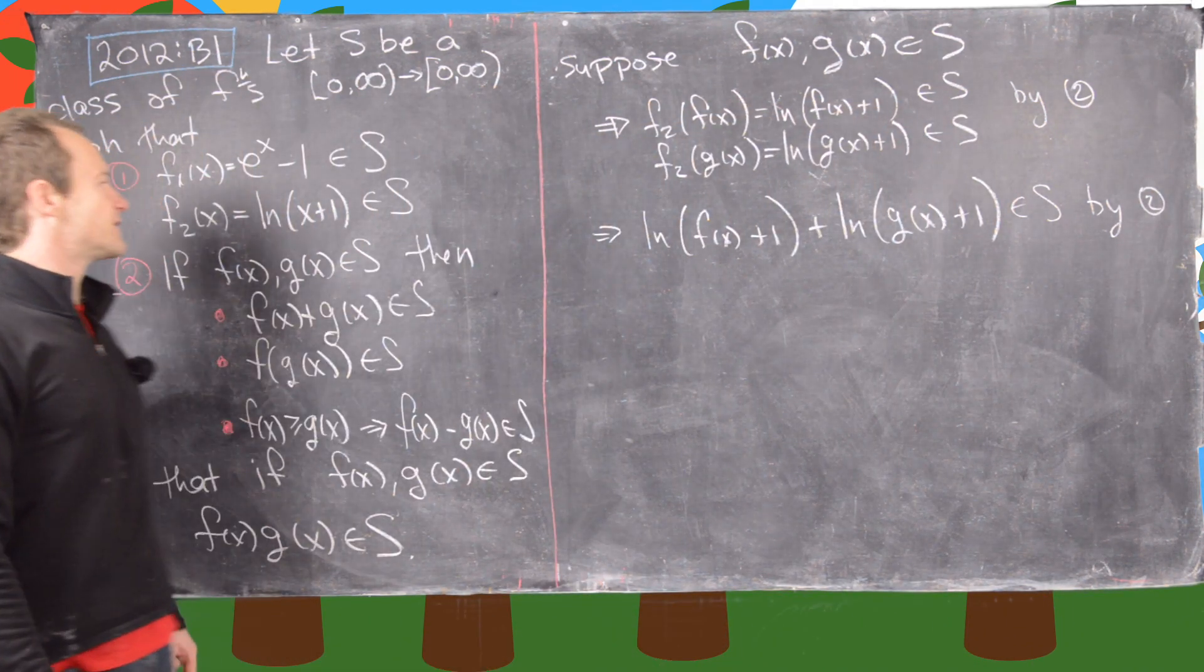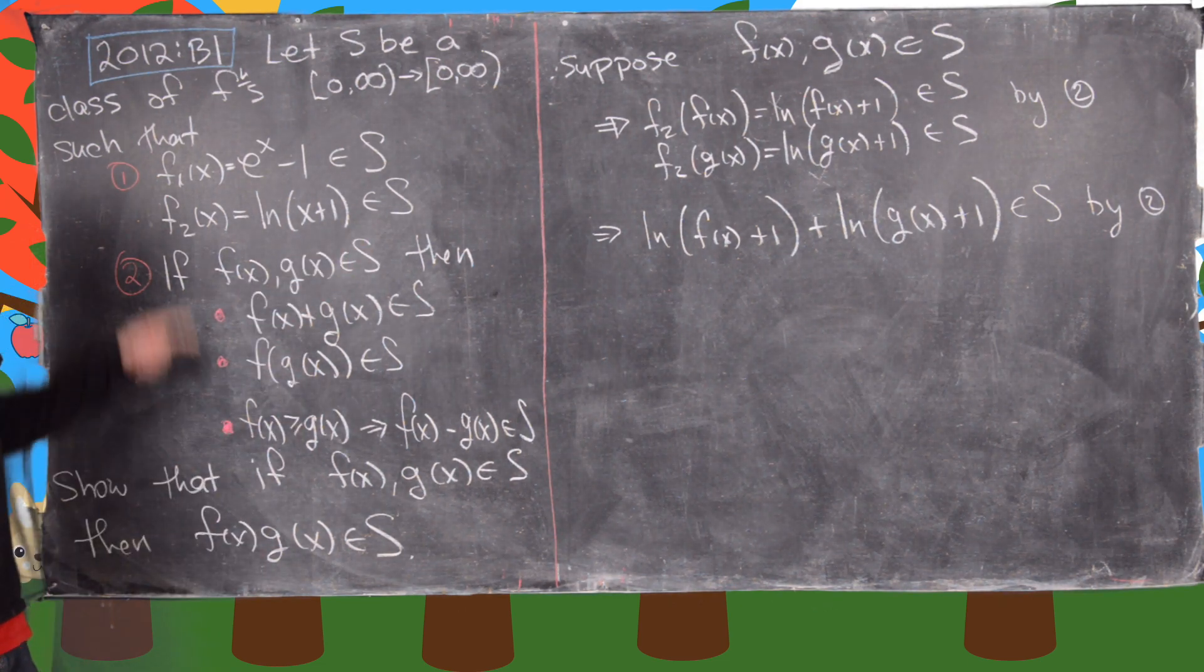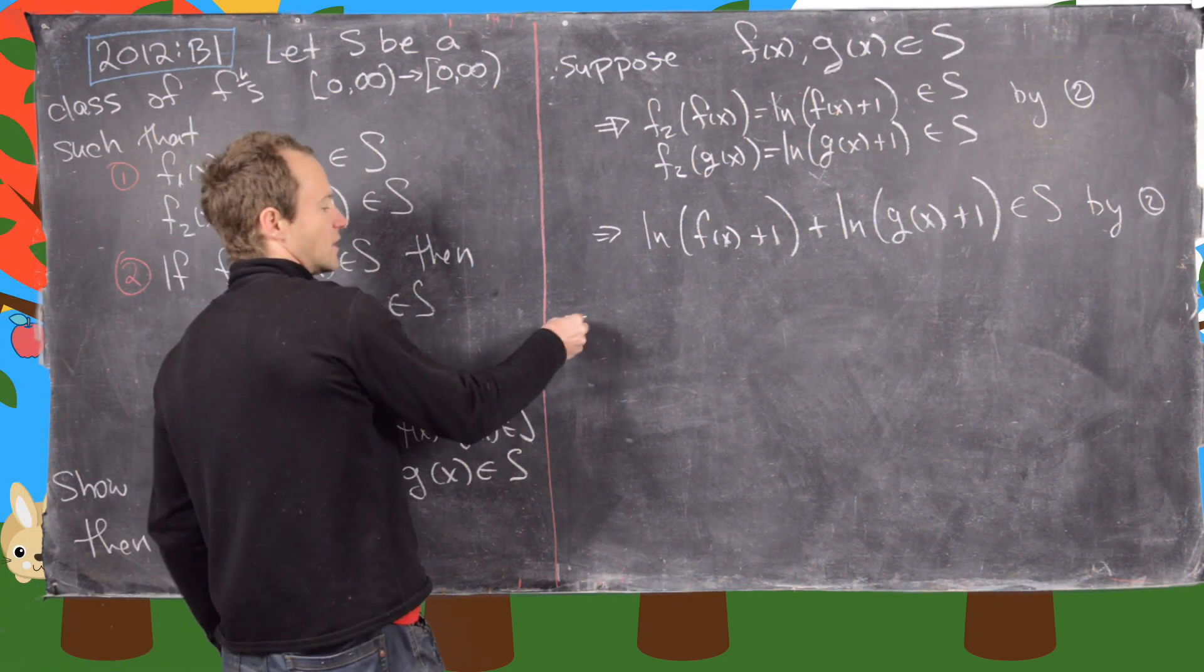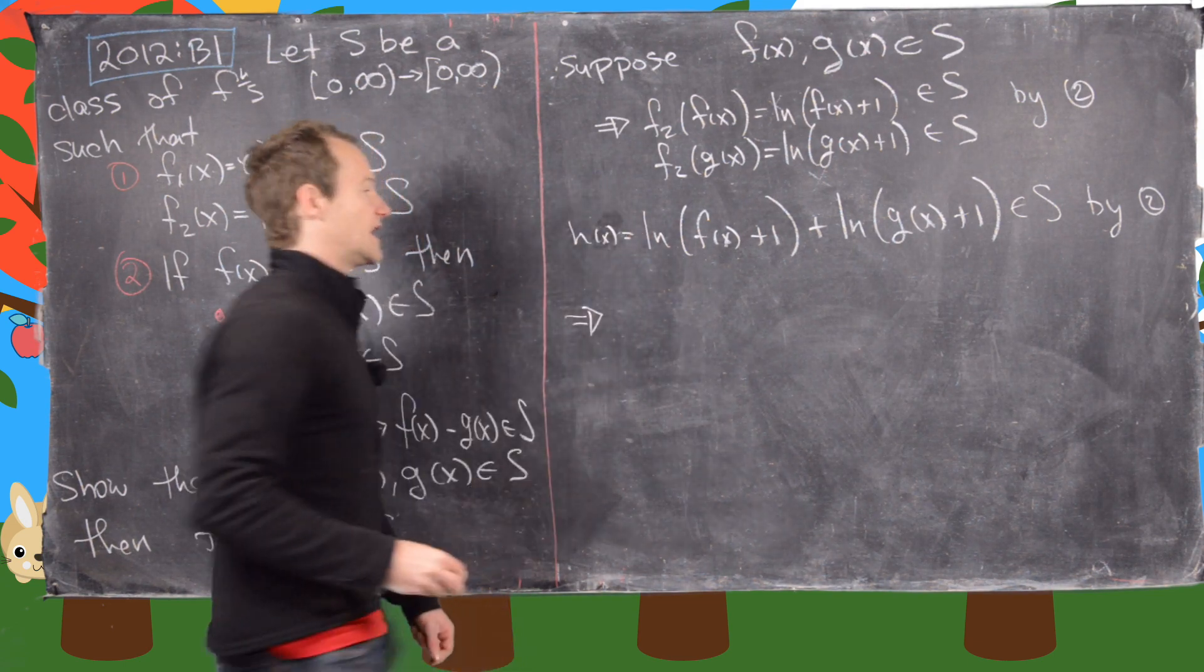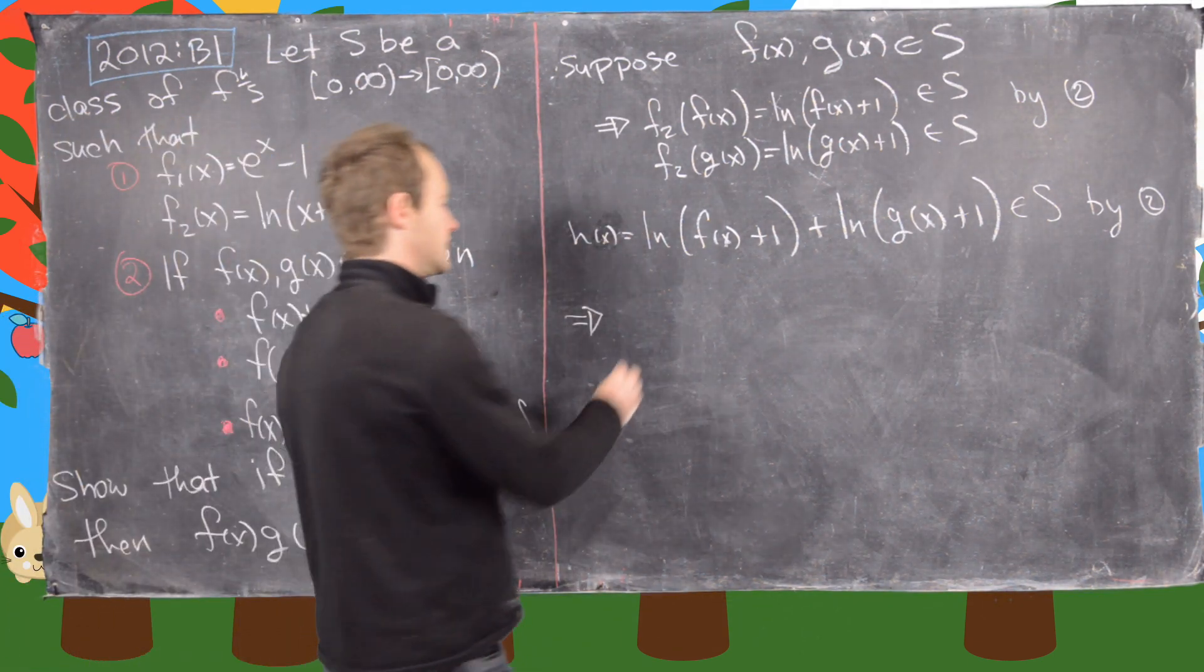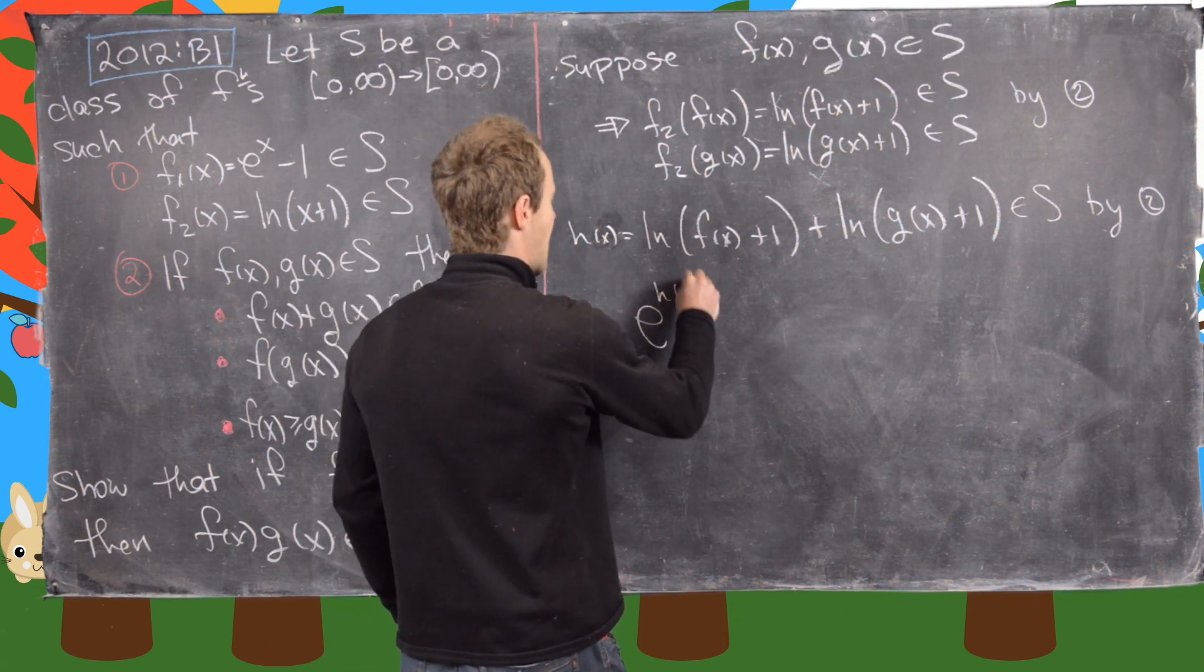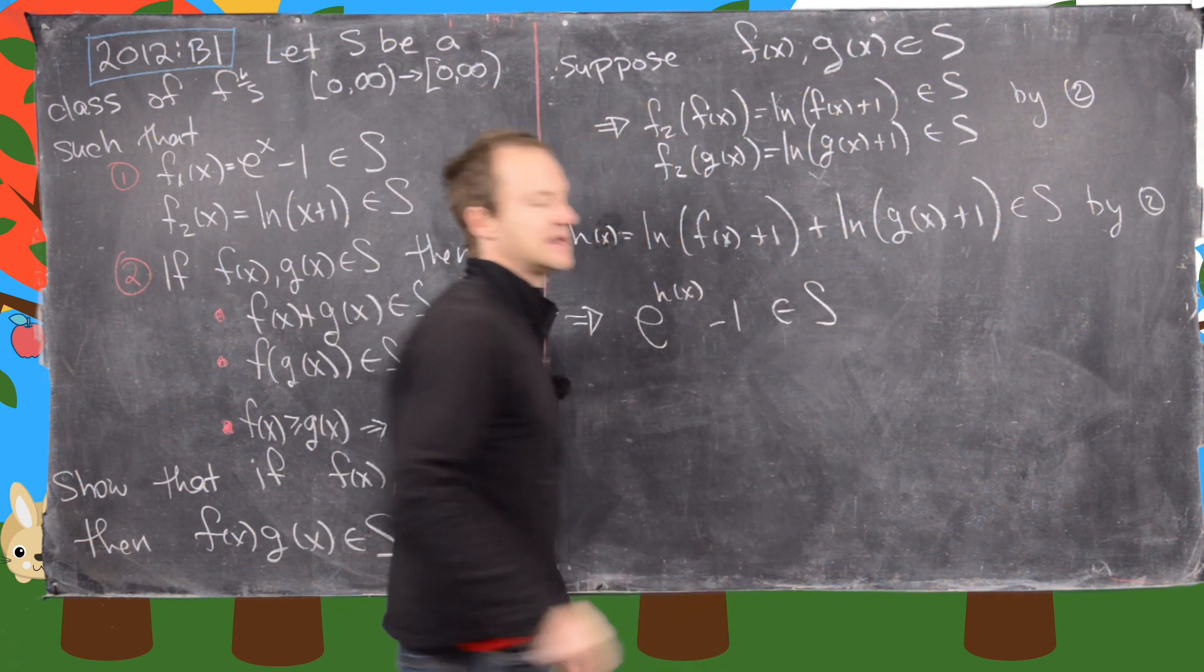Now we can stick that sum inside of f1. So let's do that. Let's maybe call this h of x just for simplification. And notice that tells us that e to the h of x minus 1 is in S.